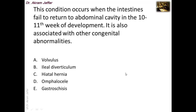This condition occurs when the intestine fails to return to the abdominal cavity in the 10th to 11th week. This is the physiological hernia that takes place from the 6th to the 10th week of intrauterine life, and it is associated with other congenital anomalies. If there is failure of reduction of this hernia, which one is likely to occur: volvulus, ileal diverticulum, hiatal hernia, omphalocele, or gastroschisis?